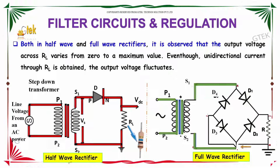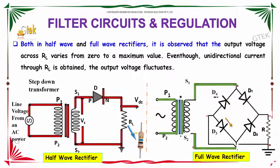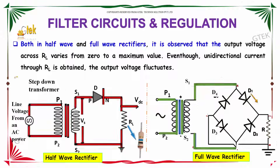This is how the half wave rectifier is, and here is the full wave rectifier. In both half wave and full wave rectifiers, it is observed that the output voltage RL varies from zero to maximum value. Even though unidirectional current through RL is obtained, the output voltage fluctuates.